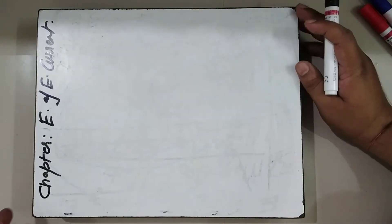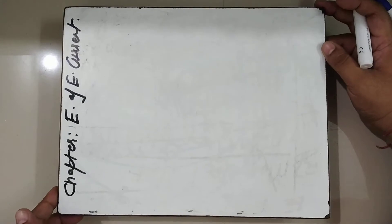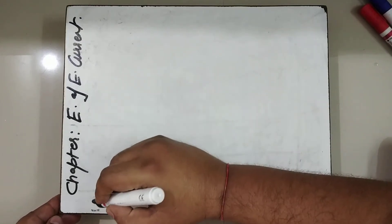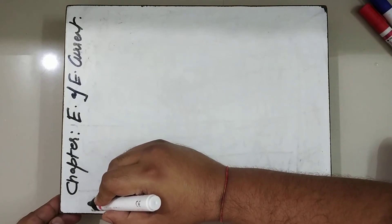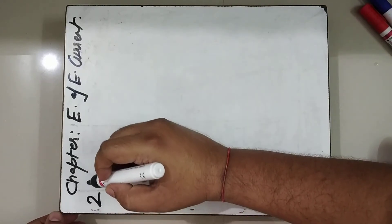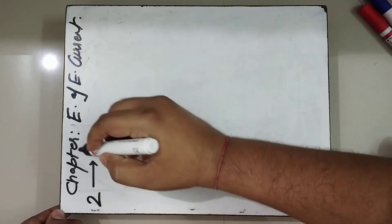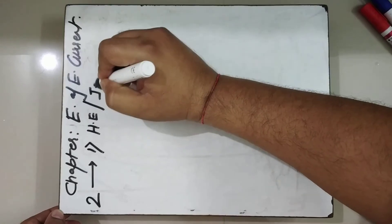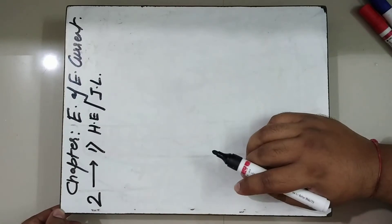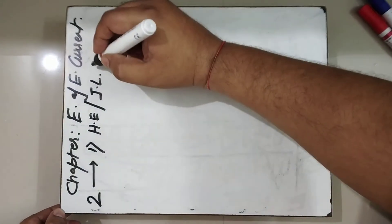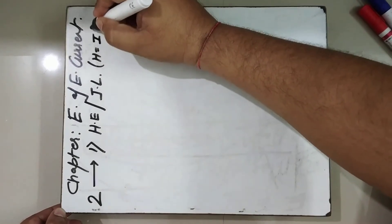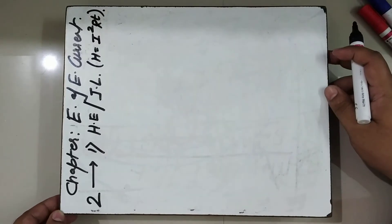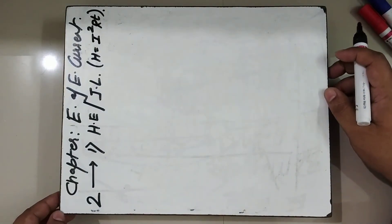I think you all have seen the first video. There are two effects we are going to read. The first is the heating effect of electric current, which is also known as Joule's Law. We have seen this in the first video, where we got the mathematical expression H equals I squared R T.